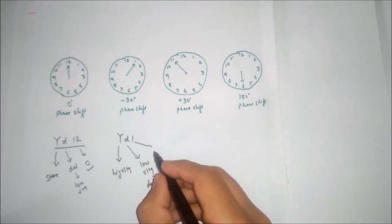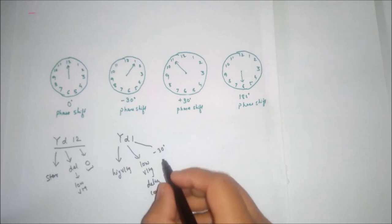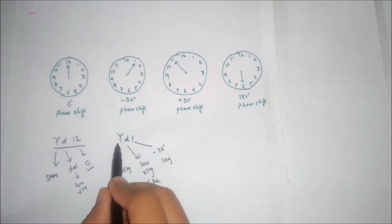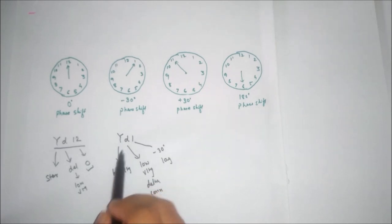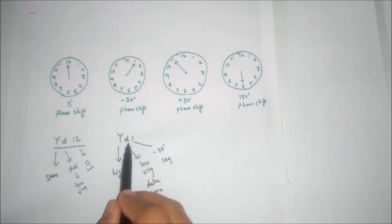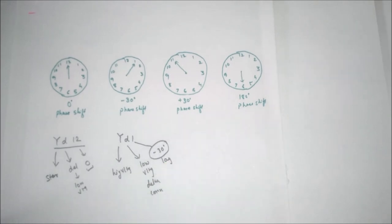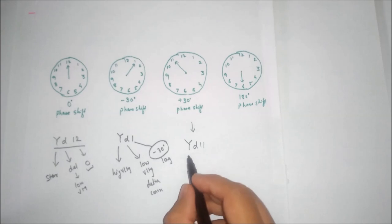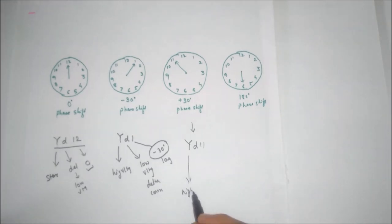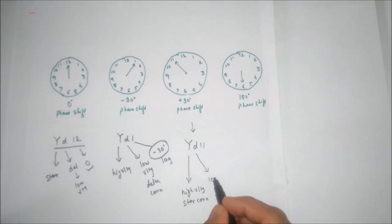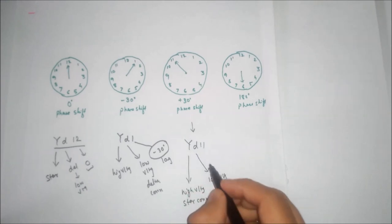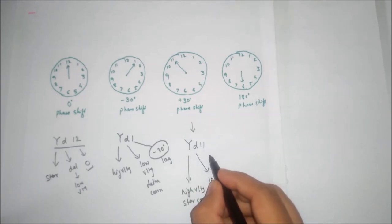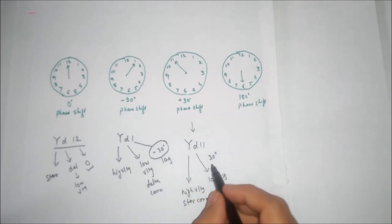YD1 में 1 means minus 30 degree phase shift है, उसको lagging भी कह सकते हैं — means low voltage, high voltage से 30 degree lagging है। YD11 means high voltage star connection, D means low voltage delta connection, और low voltage, high voltage से 30 degree leading है।